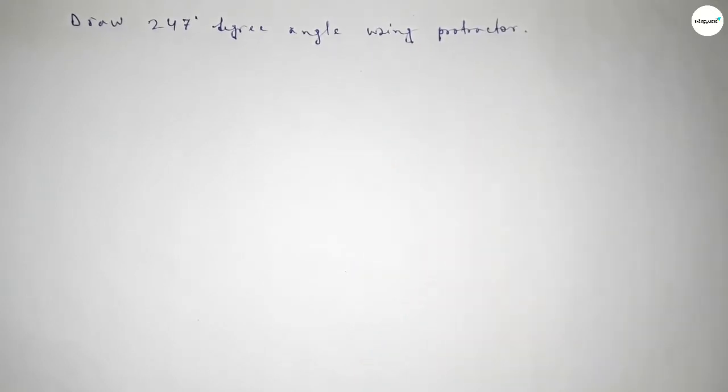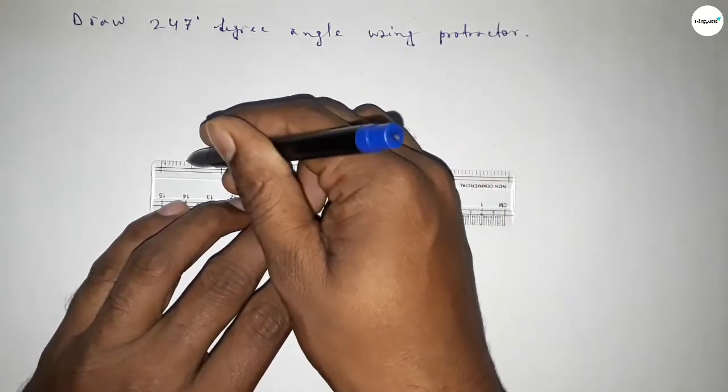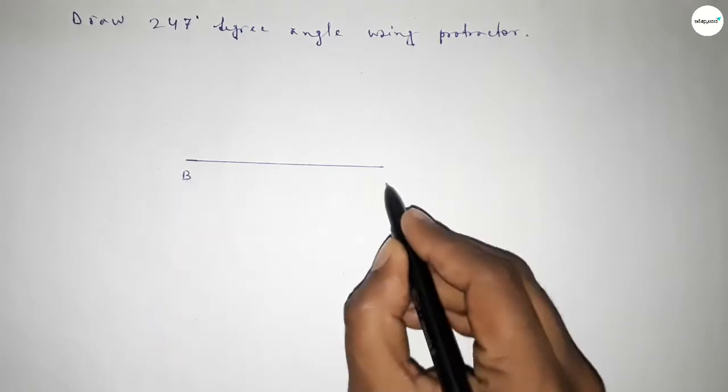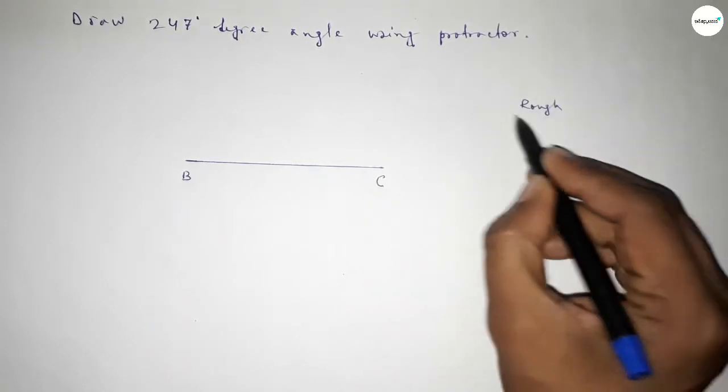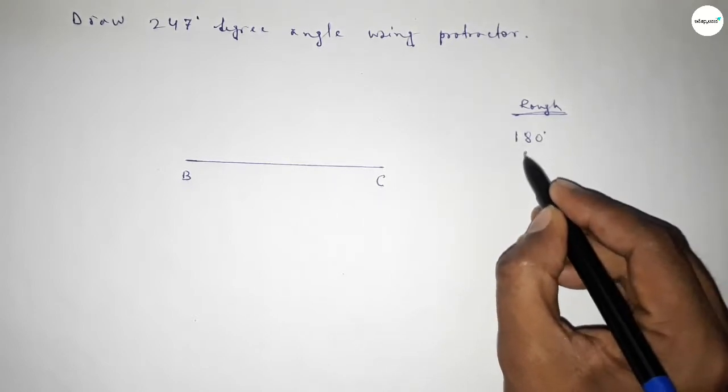So let's start the video. First of all we have to draw here a line of any length and taking here point B and here C. Now roughly discussing here calculation, so if we add 67 degree angle with 180 degree then we can get 247.